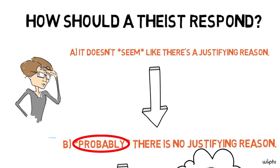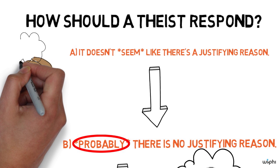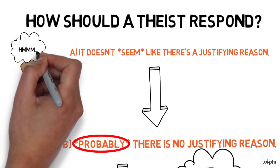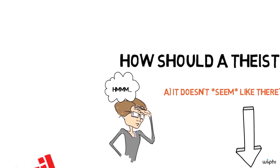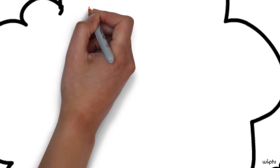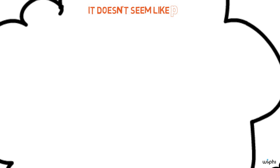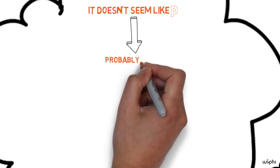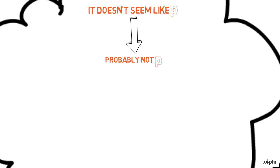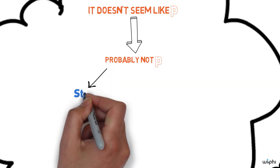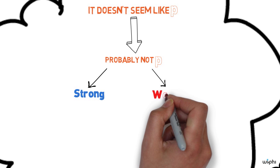Now what Steve Weikstra does with this is he thinks hard about this inference from it seems like there's no justifying reason to probably there's no justifying reason. I'm oversimplifying his case quite a bit, but it's as if he's making this claim. Sometimes inferences of that kind are very strong and sometimes they're very weak.